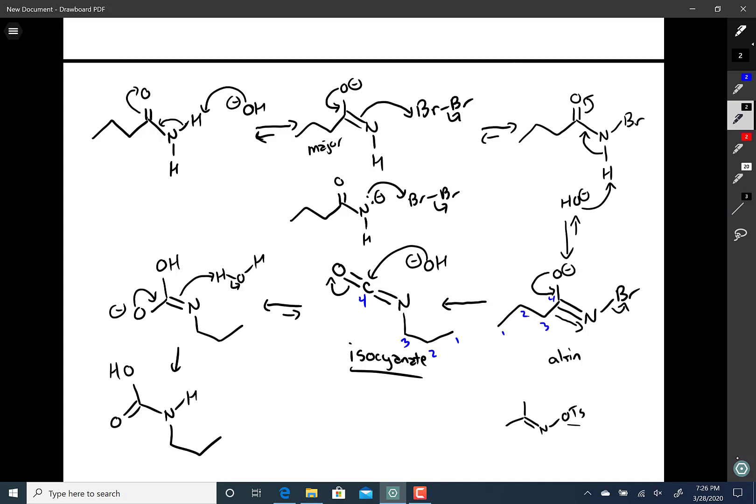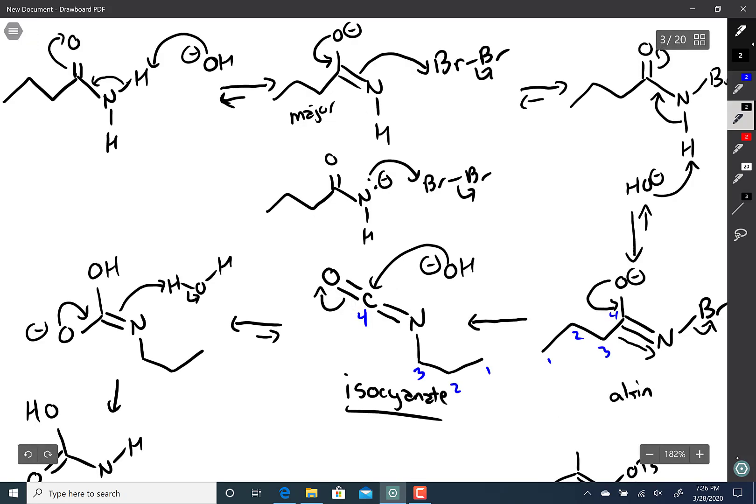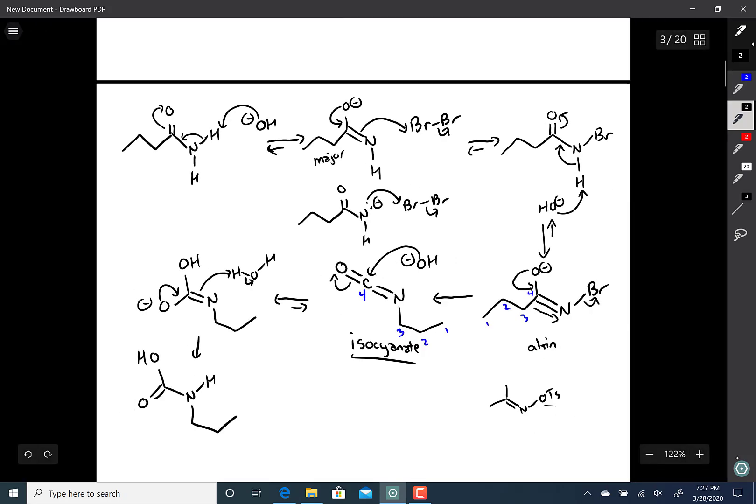Like so. And then what we're going to do is we're going to protonate the nitrogen. We're going to have the electrons O minus swings down. Kick those electrons to here and onto there. And that gives this material here. Now, this pattern here.